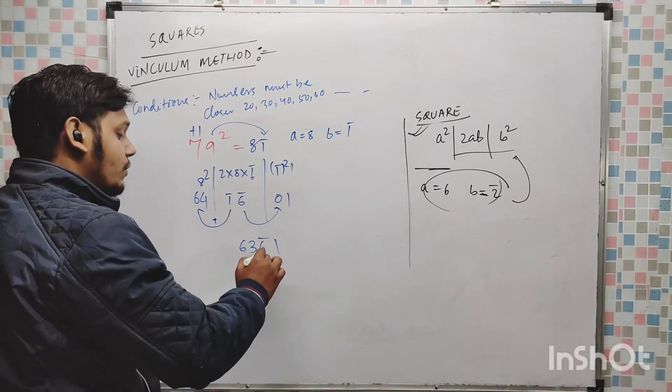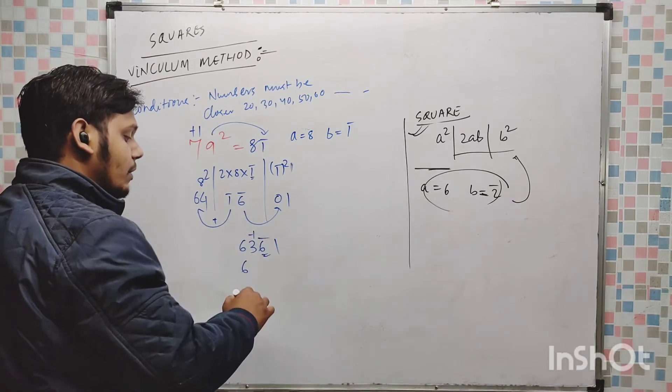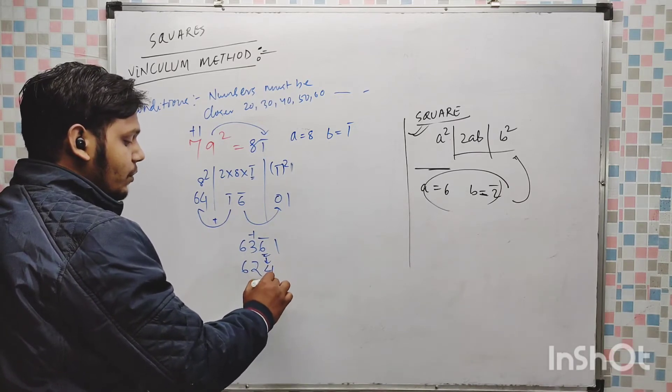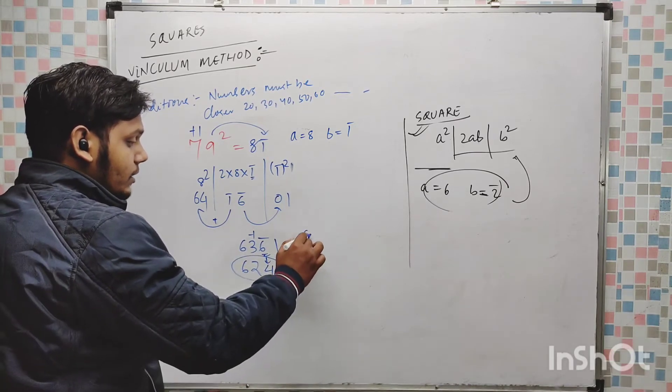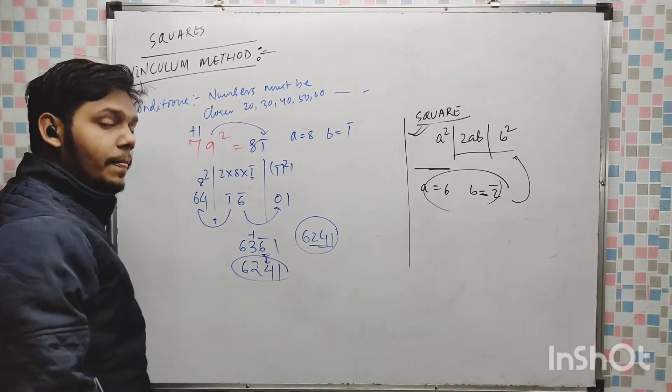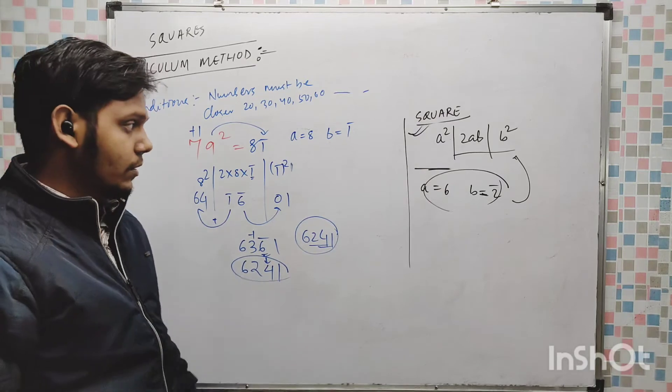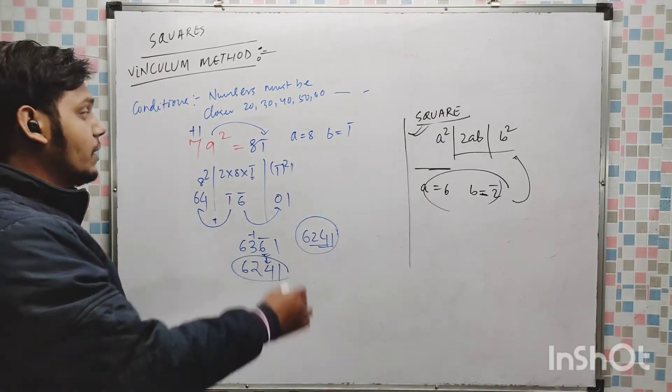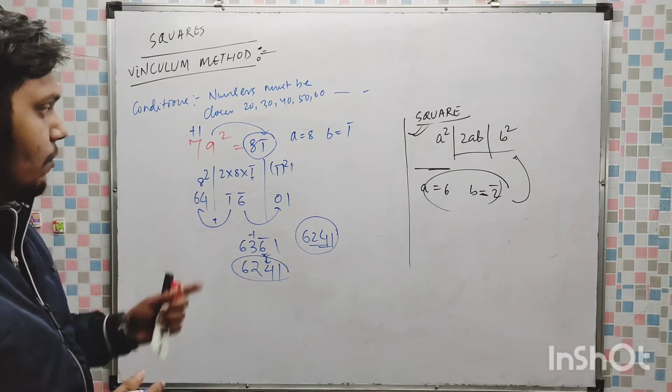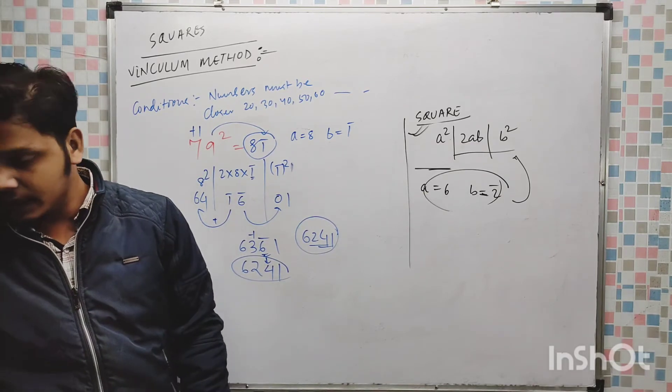Now 6, as we are having bar here, this number will be decreased by 1, 62, and thereafter 6 complement is 41. The answer is 6241. Same method you have to use but you have to take out the vinculum number. One more example I will explain.